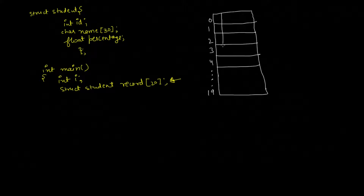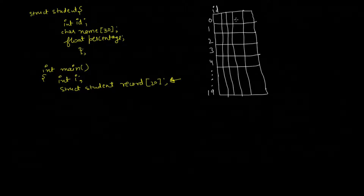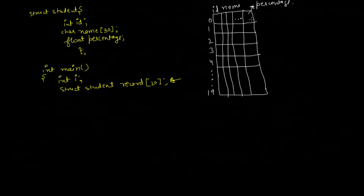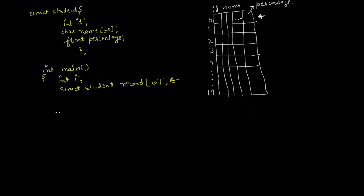All these index locations will have an id part, then a character array for the name part, and then a percentage part. Now if you want to access a memory location and store some data into it, then to do it you have to write: record[0].id = 1.